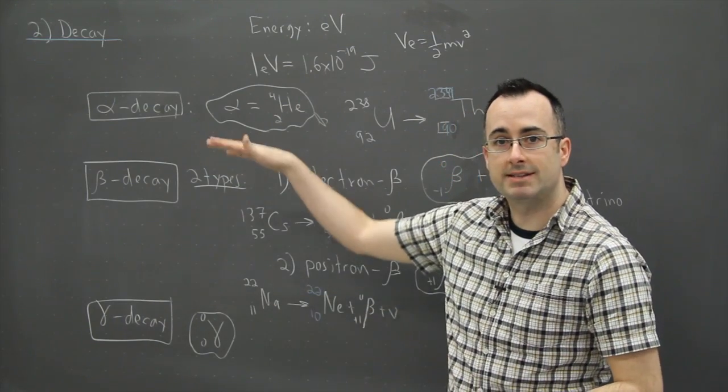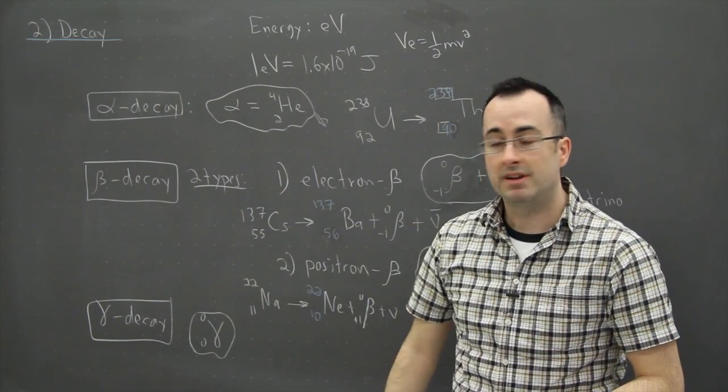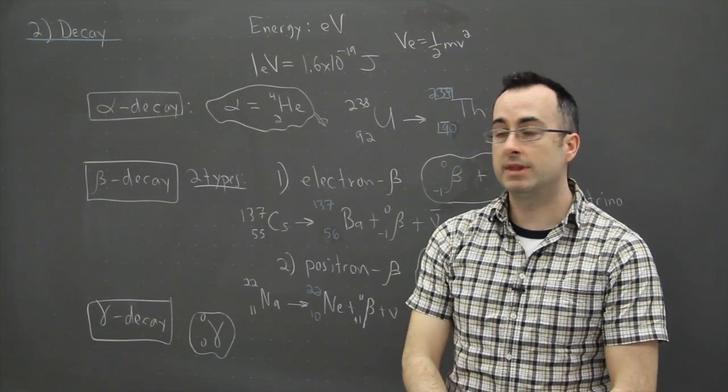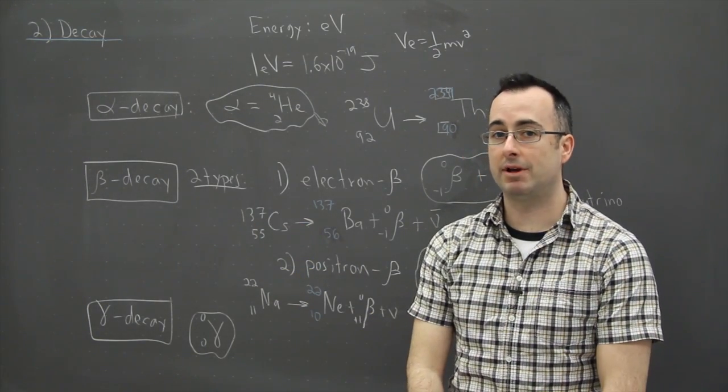which means if something undergoes gamma decay, it just means the electron got excited and then dropped back down. In other words, nothing really changes here. So that is alpha, beta, and gamma decay.